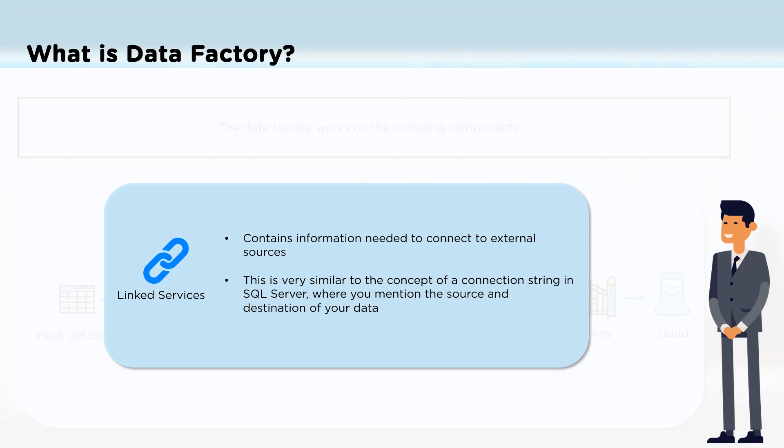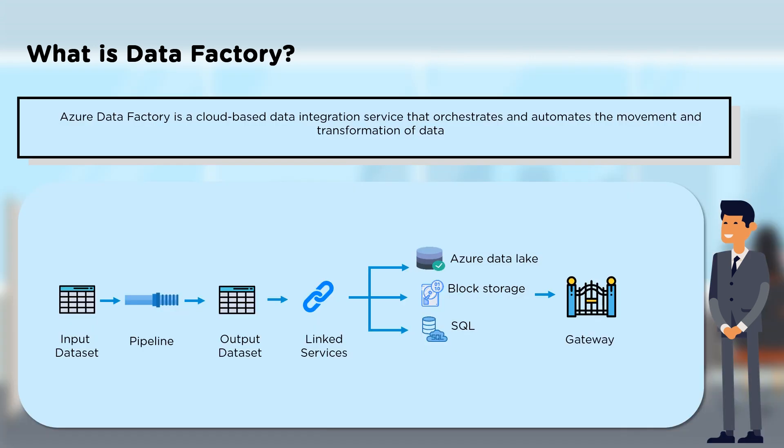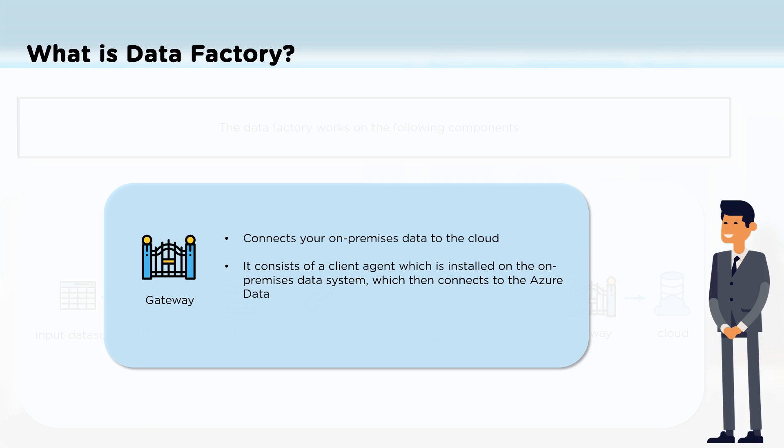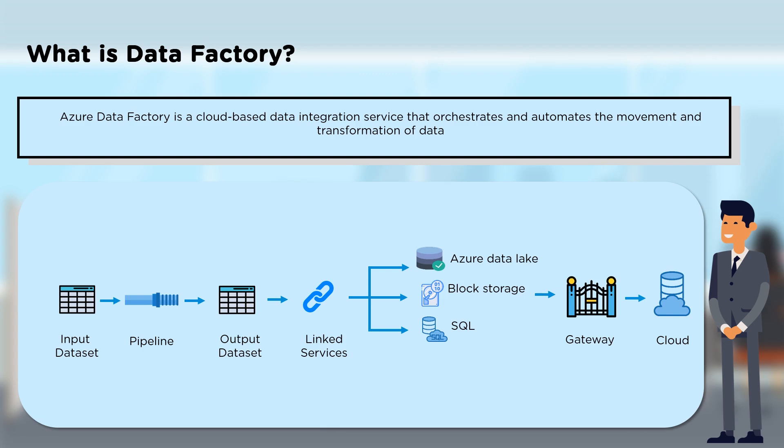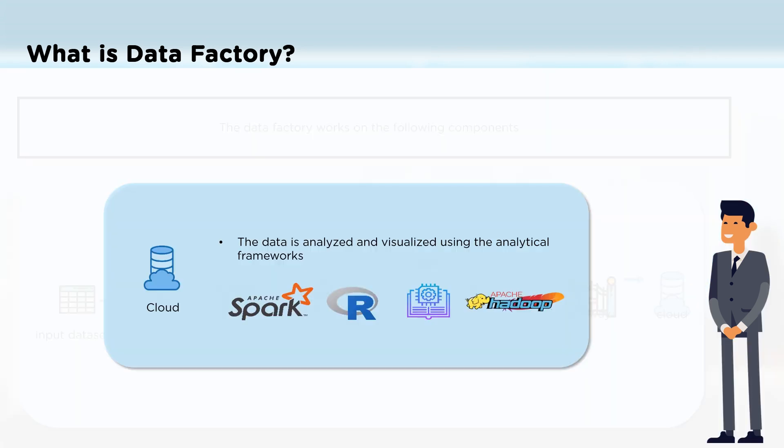Linked services store information that is very important when connecting to an external source. For example, consider an SQL server — you need a connection string so you can connect to an external device and mention the source and destination of your data. This is how linked services work. Finally, you need a gateway, which connects your on-premises data to the cloud. You need a client installed on your on-premises system to connect to Azure. In the cloud, your data can be analyzed or visualized with a number of analytical software options like Apache Spark, R, Hadoop, and so on.